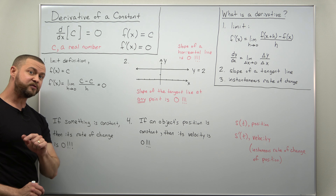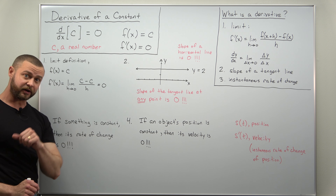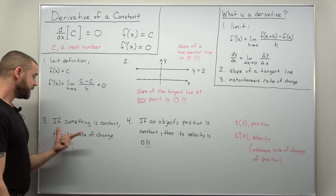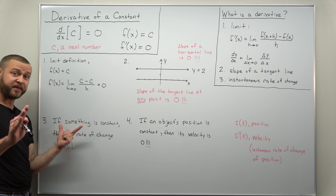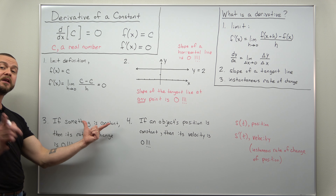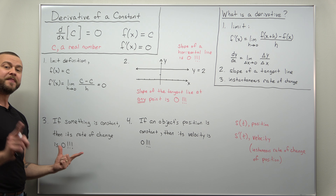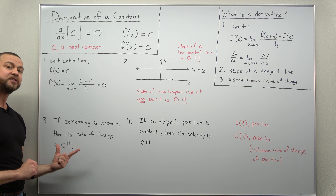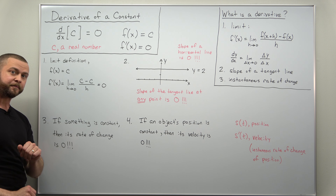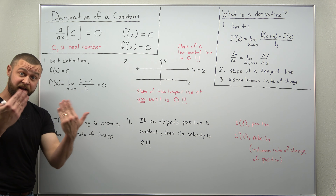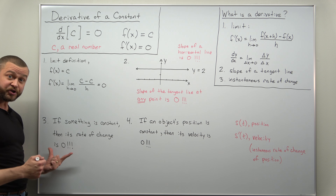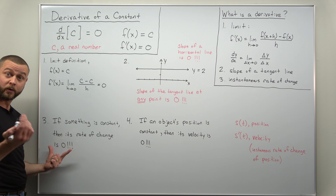Thinking now of derivatives as rates of change: a general result is that if any quantity whatsoever is constant, then that quantity's rate of change is 0. If something's constant, it's not changing, so it makes sense that the rate of change would be 0.